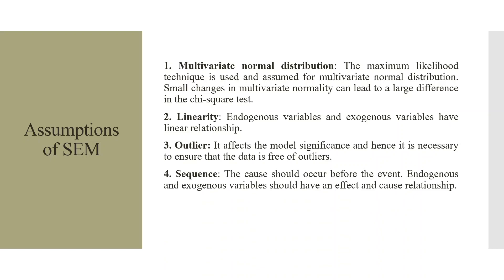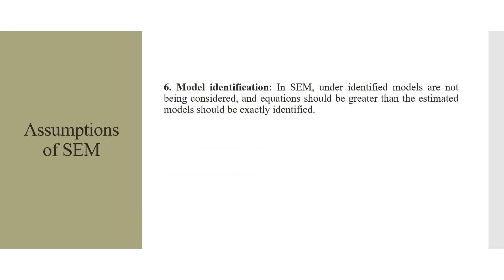The sequence should be maintained — meaning cause and effect. The cause should occur before the event. Endogenous and exogenous variables should have a cause-and-effect relationship. There should not be any non-spurious relationship. Covariance observed should be correct between the constructs. Regarding model identification, in SEM, under-identified models are not considered and the equations should be greater than the estimated parameters. In upcoming videos, I will explain the concepts of under-identified, just-identified, and over-identified models.